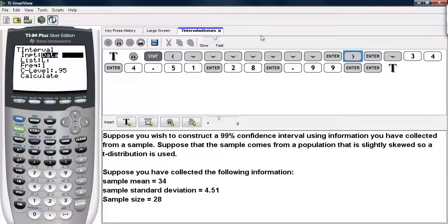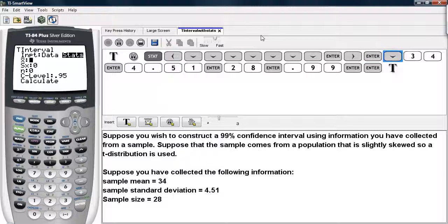And then at this point you highlight STATS and hit ENTER, and then you type in the information. The sample average is typed in first, then the sample standard deviation, and then the sample size.